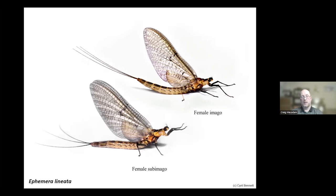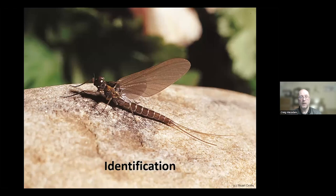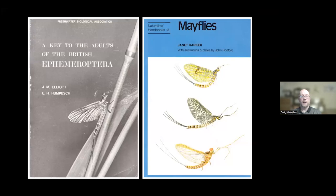That covers the life cycle of mayflies and a bit of their history. For identification of adult mayflies, there are a couple of useful books: the Freshwater Biological Association key to adults of British Ephemeroptera, written in 1983 — quite old and missing some species but still usable, available as a photocopy from the FBA. There's also the naturalist handbook on mayflies by Janet Harker, with easy-to-use keys, though it has some errors — contact Craig for an erratum sheet.